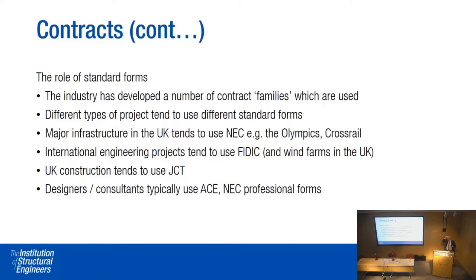The industry has developed a number of contract form families used for different types of projects. Major infrastructure in the UK tends to use the NEC — used on the Olympics, currently on Crossrail, and it will be used on High Speed 2 also. For international projects, FIDIC is a very common form, and it also seems popular here in the UK for wind farms. UK commercial building works tend to use the JCT standard forms.